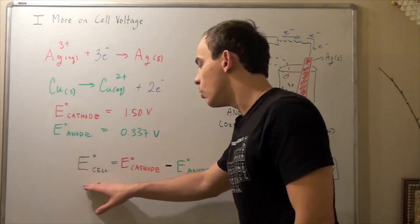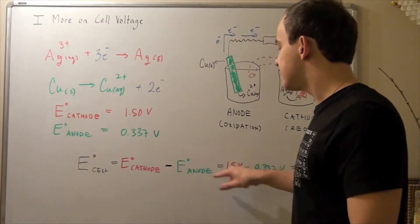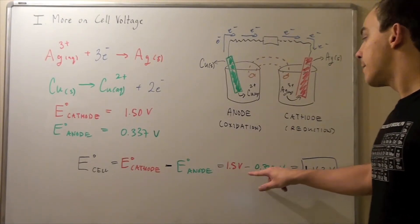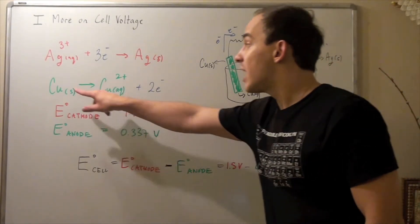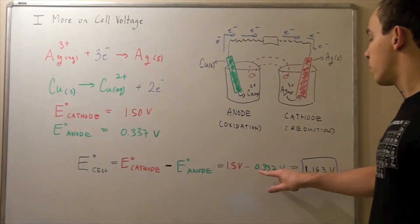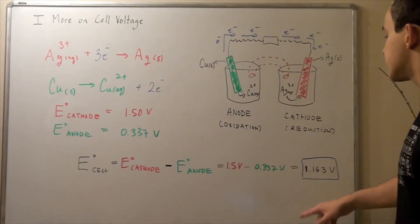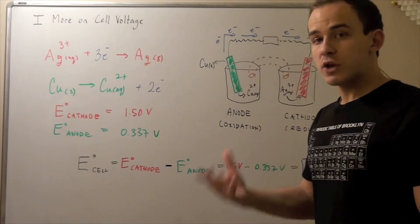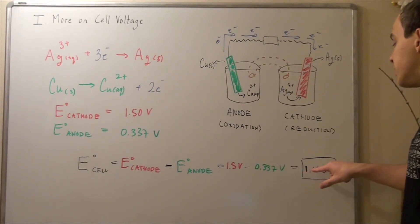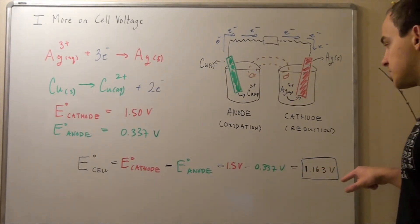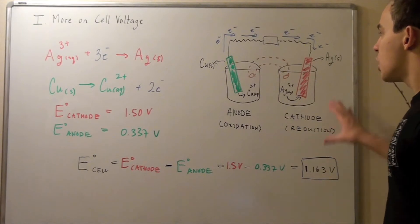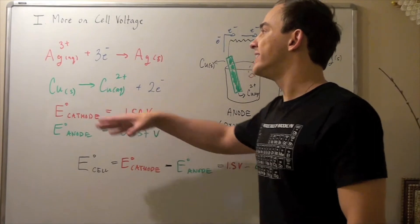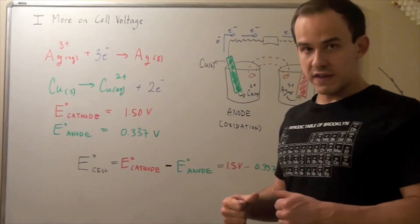So to find our cell voltage, we simply plug these in, and we get 1.5 volts of reduction minus, minus comes because we're dealing with oxidation, not reduction, minus 0.337 volts gives us a final cell voltage under standard conditions of one molar concentration and one bar pressure of 1.136 volts. So this is the cell voltage of this reaction. Notice that it's positive. That means the reaction or the net redox reaction is, in fact, product favored.